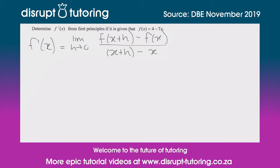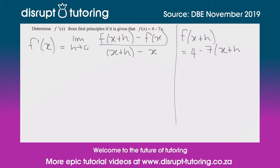Now what do we need? We need f(x+h). We've already got f(x), so let's quickly find what f(x+h) is. f(x+h) is equal to 4 minus 7 times (x+h), which equals 4 minus 7x minus 7h.